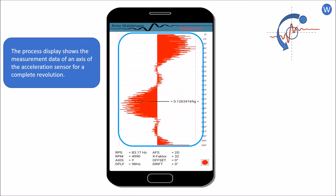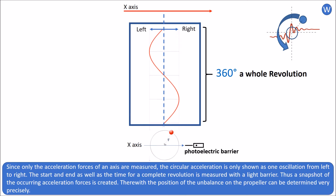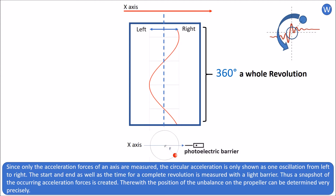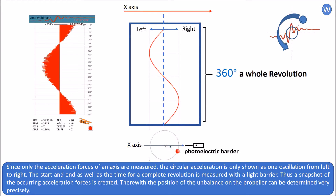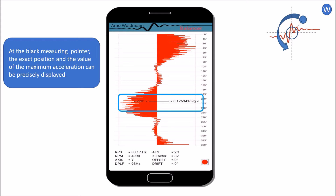The process display shows the measurement data of an axis of the acceleration sensor for a complete revolution. Here is a schematic representation. Since only the acceleration forces of one axis are measured, the circular acceleration is only shown as one oscillation from left to right. The start and end as well as the time for a complete revolution is measured with a light barrier. Thus a snapshot of the occurring acceleration forces is created, and the position of the unbalance on the propeller can be determined very precisely. At the black measuring pointer, the exact position and the value of the maximum acceleration can be precisely displayed.